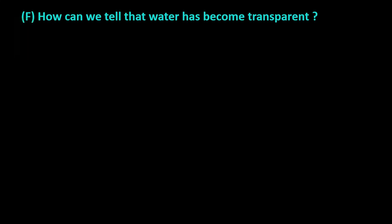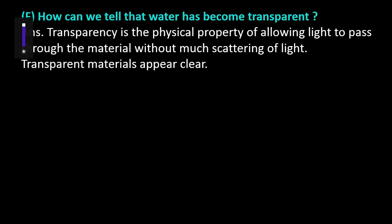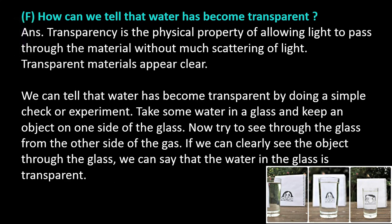Exercise question number F: How can we tell that water has become transparent? Answer: Transparency is the physical property of allowing light to pass through the material without much scattering of light. Transparent materials appear clear. We can tell that water has become transparent by doing a simple experiment: take some water in a glass and keep an object on one side of the glass. Now try to see through the glass from the other side. If we can clearly see the object through the glass, we can say that the water is transparent.